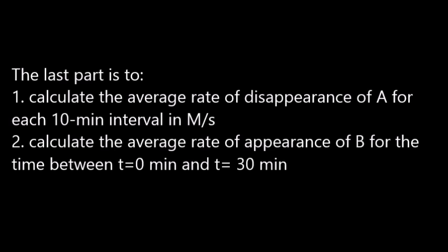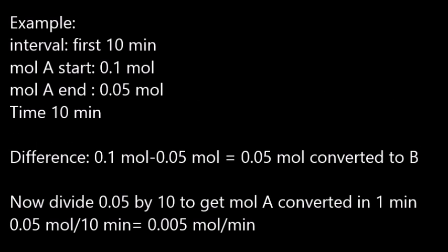The last task is divided into two similar calculations. The first one aims at calculating the average disappearance rate of A in mole per liter for every 10 minute interval. And the second one consists of calculating the opposite: the average appearance rate of B in the first 30 minutes of the reaction.